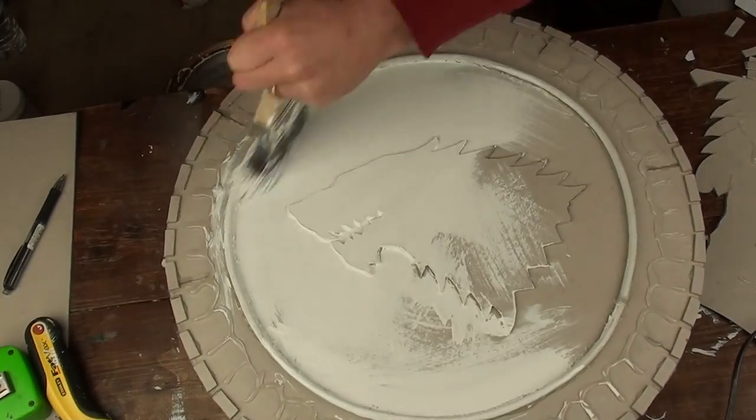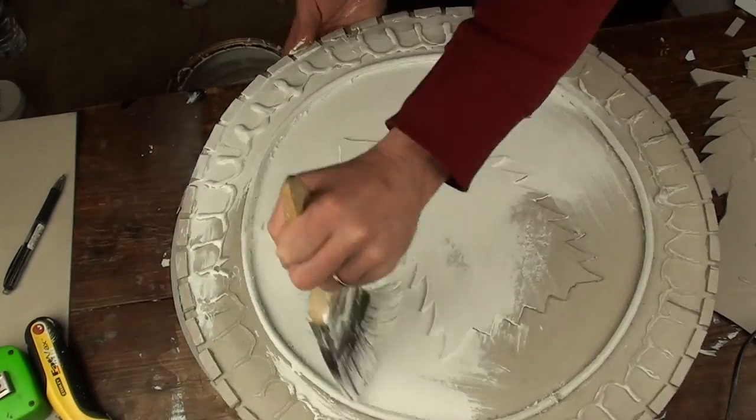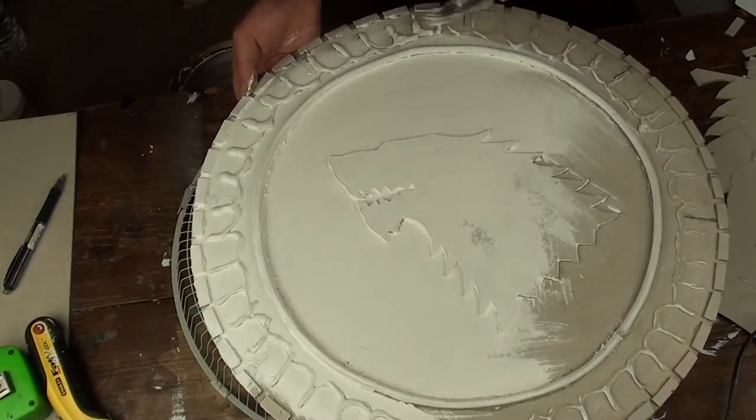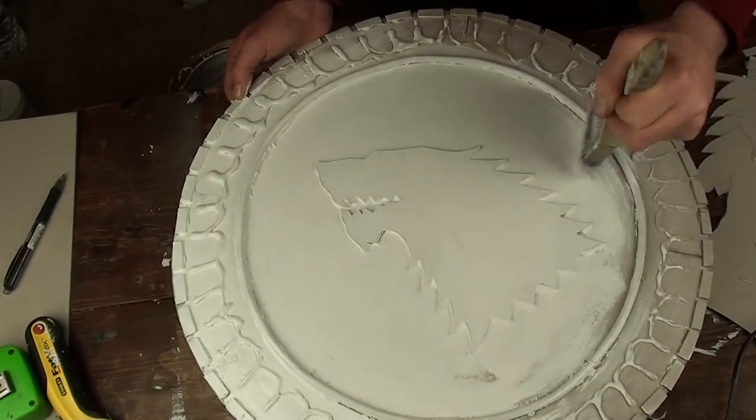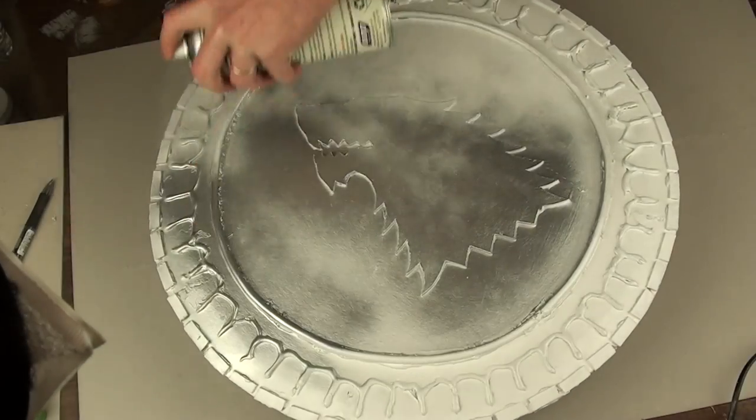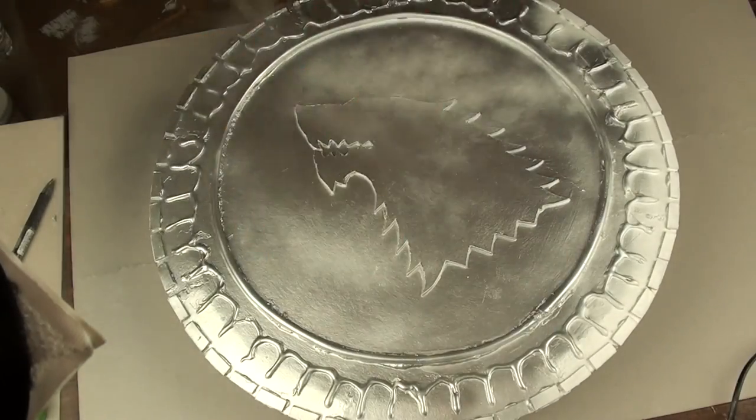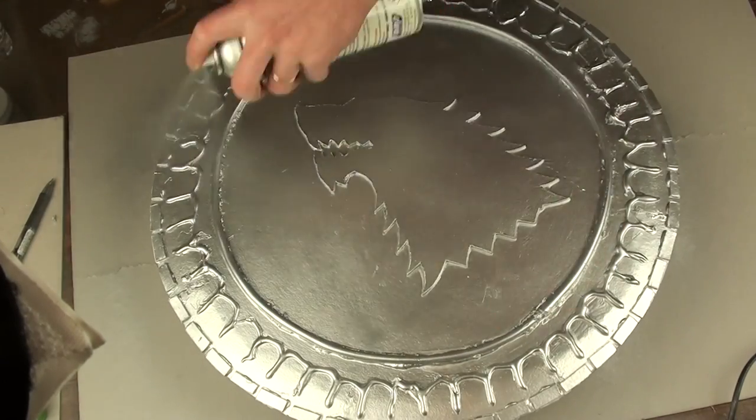Now it's time to paint the shield as white as Winterfell snow. Well, you can kind of paint it any color you want actually. Just an acrylic paint, any paint will do. And then it's on to spray painting it with some chrome paint to keep that nice metallic look.